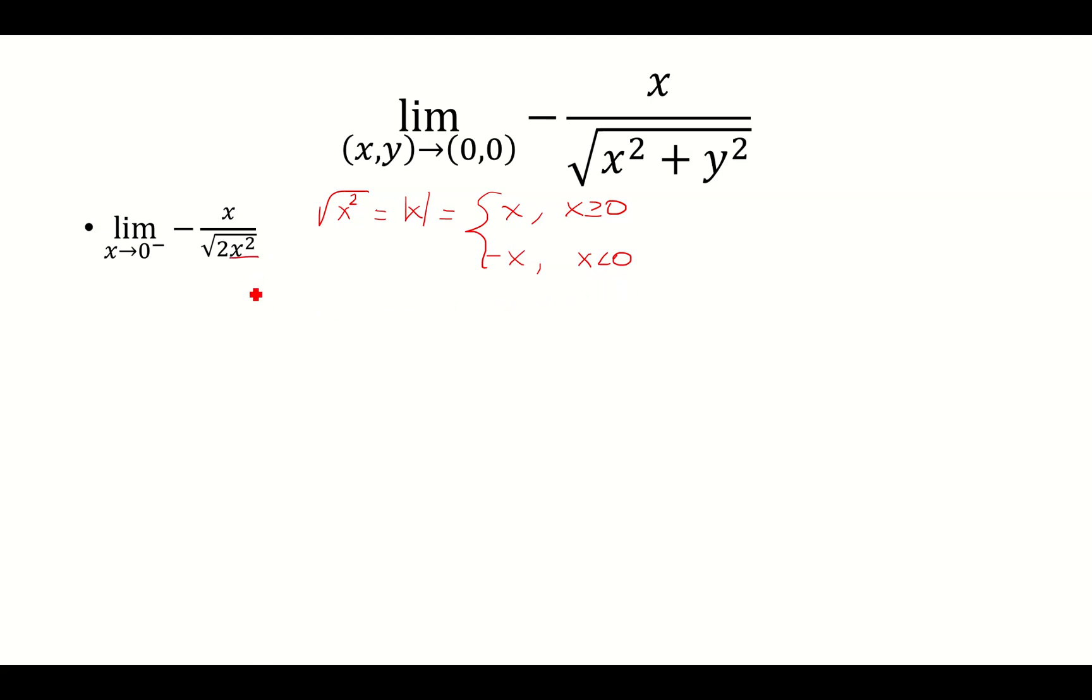So this square root of x squared becomes absolute value of x, and because we're looking at 0 from the left, the absolute value of x is going to equal negative x. The negatives are going to cancel, so is the x, and I'm left with 1 over root 2.